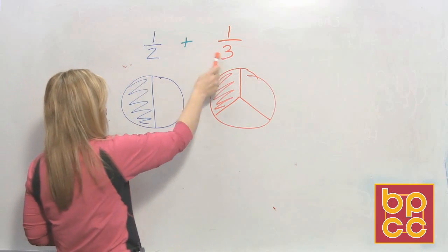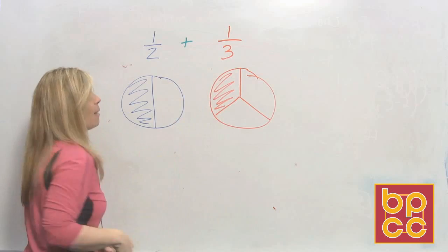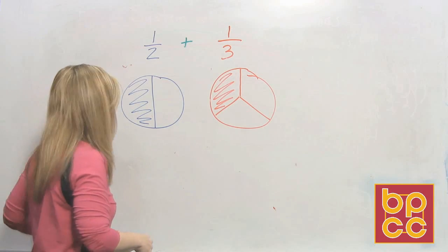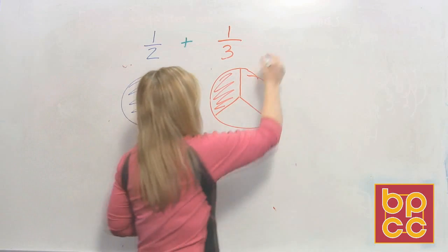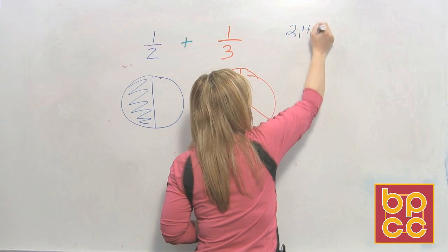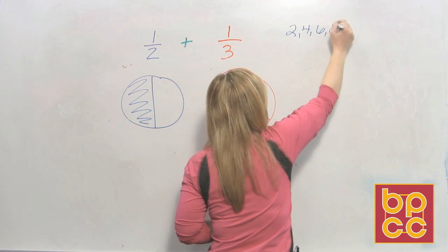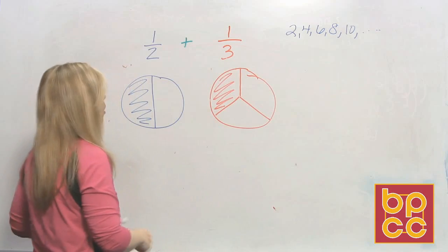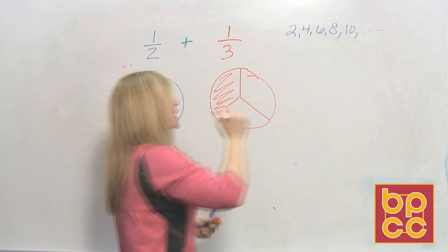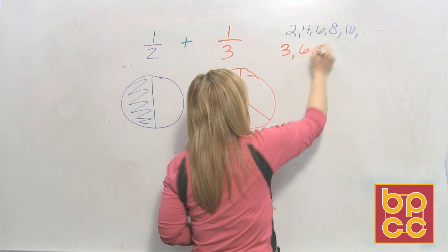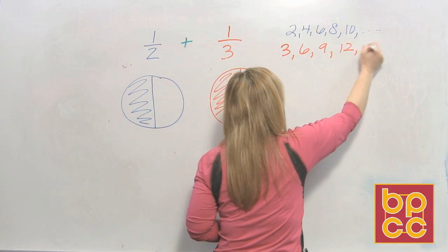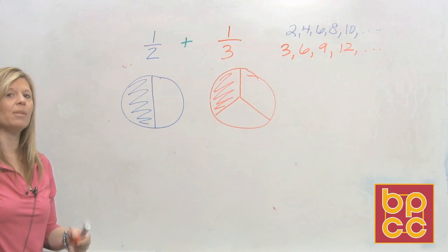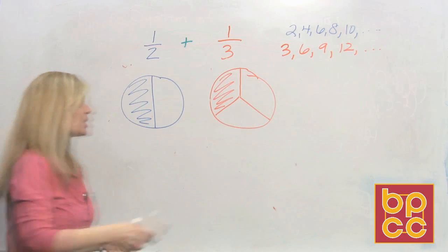I need a number that two and three have in common on their times tables. If you go through the two times tables, you would say two, four, six, eight, ten... And if you were going through the three times tables: three, six, nine, twelve... The number that they have in common that's the lowest is six.